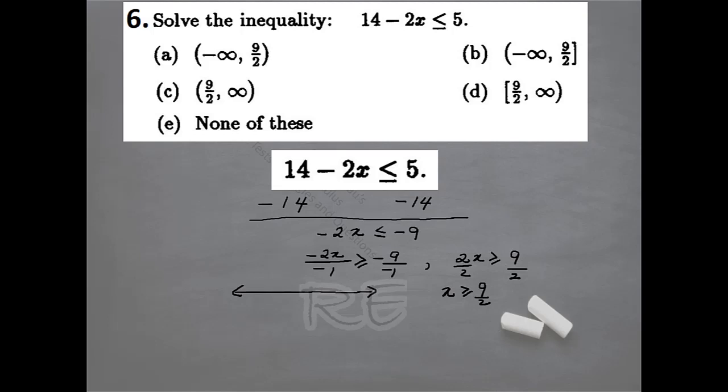Zero is in the middle, and 9 halves is around here. Open brackets at 9 halves, and it goes to infinity.